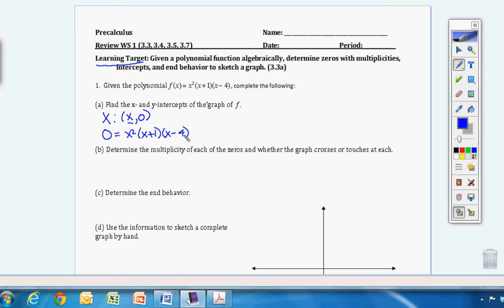Okay, so if I set x squared equal to zero, then x is going to be zero. So I have a point, an intercept at zero, zero.